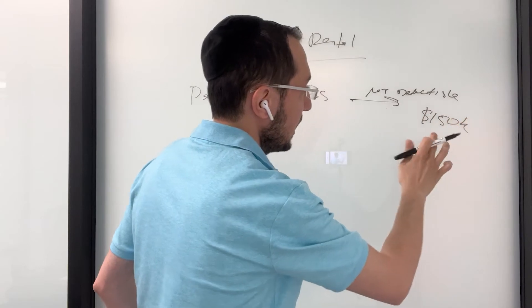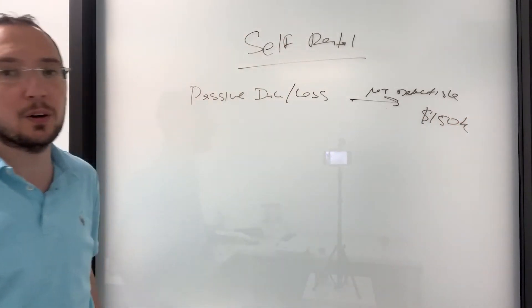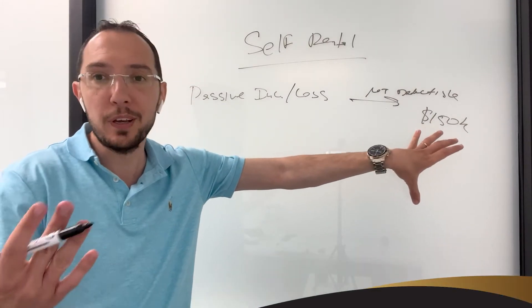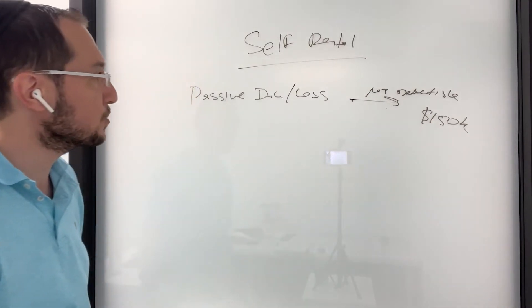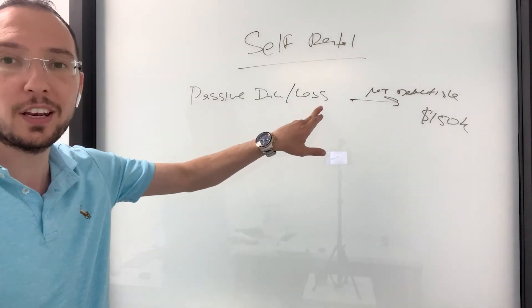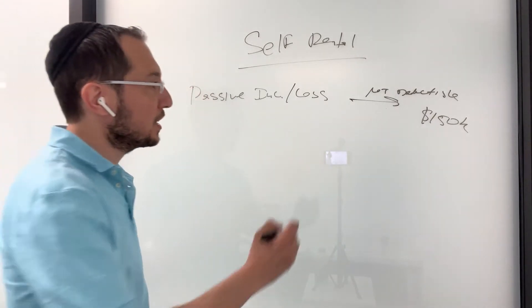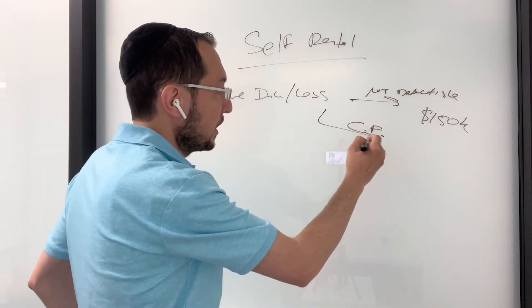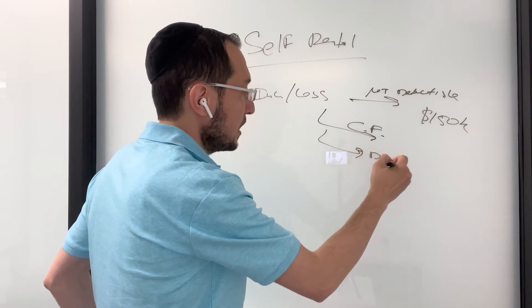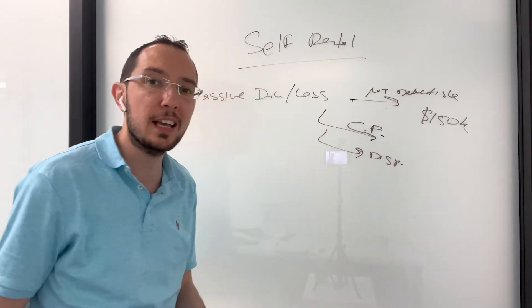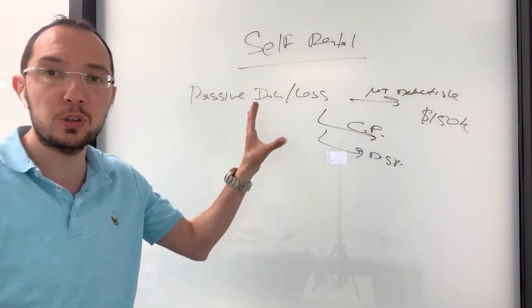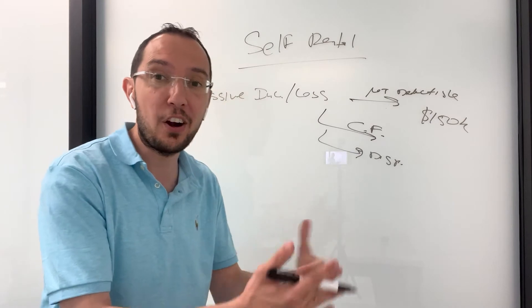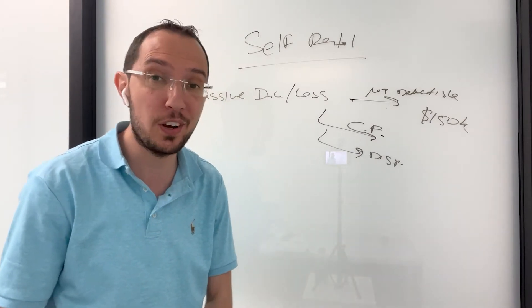And generally speaking, this rule is true. If you are married and making more than $150,000 in your total income, any loss generated is not tax deductible. It is either carried forward or it's deductible at disposition, meaning to say, if you ever sell a rental real estate, that is when you can actually take all those losses that you have accumulated and deduct it that year against any gains.